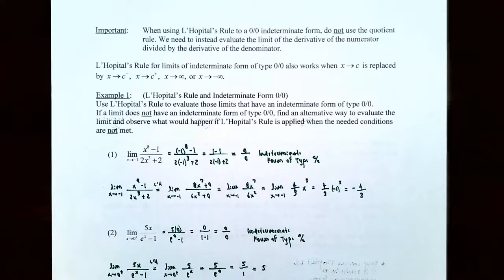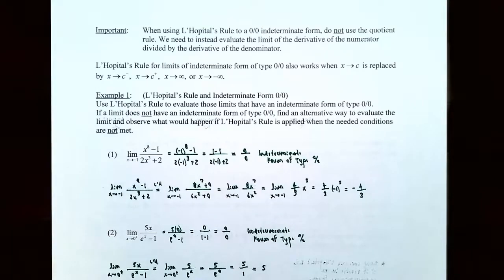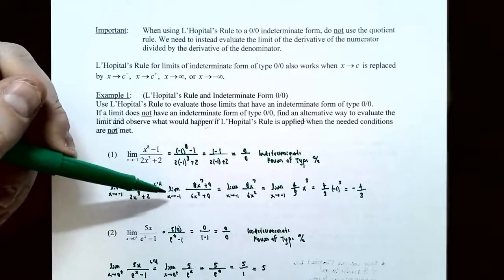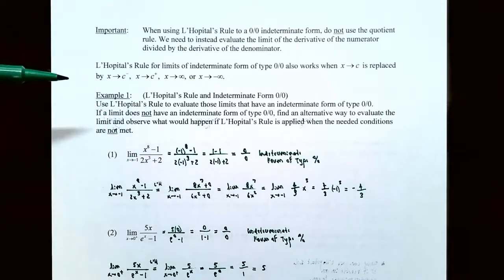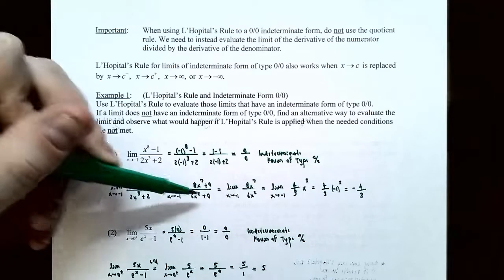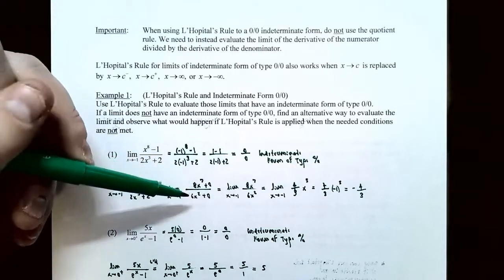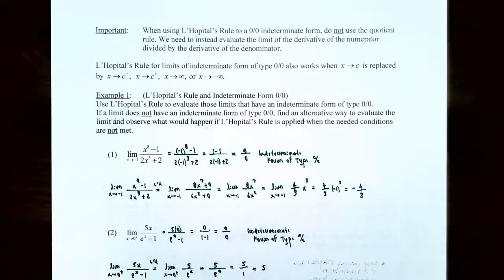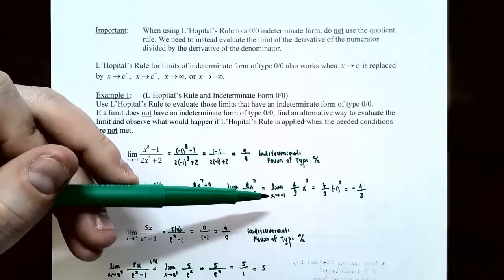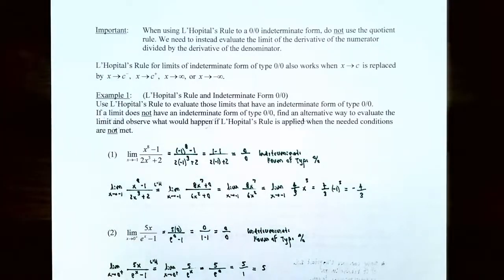Since we have a 0/0 indeterminate form, we can apply L'Hôpital's rule. The limit as x approaches -1 of (x^8 - 1)/(2x^3 + 2), using L'Hôpital's rule, becomes the limit as x approaches -1 of 8x^7 divided by 6x^2. Simplifying: 8/6 reduces to 4/3, and x^7/x^2 gives x^5. So we have the limit as x approaches -1 of (4/3)x^5. Plugging in x = -1: (4/3)(-1)^5 = -4/3. Note that the limit notation is dropped when you substitute x = -1.